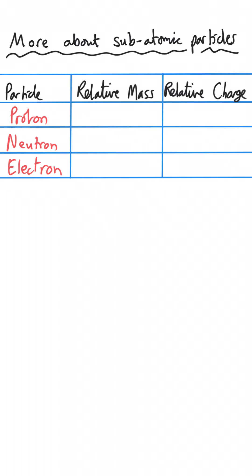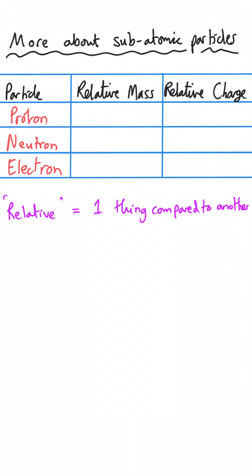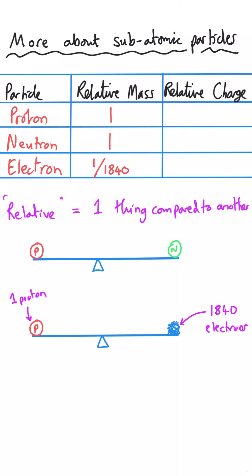You need to know very specifically what the mass and charge of protons, neutrons, and electrons are. We don't actually measure the actual mass of a proton and a neutron because it would be so small — so many decimal points we couldn't get our heads around it. So we compare them to each other using what's called the relative mass. A proton and a neutron have got the same mass, and so we give them a relative mass of one — a proton would balance a neutron perfectly on a seesaw. Whereas an electron is much, much lighter — we can consider it to be almost zero, but actually it's 1/1840th of the mass of a proton.